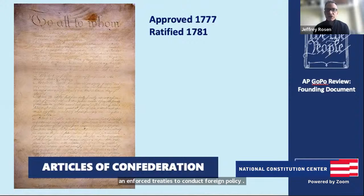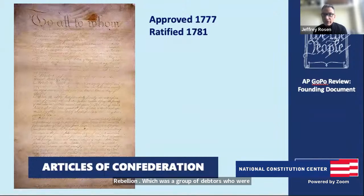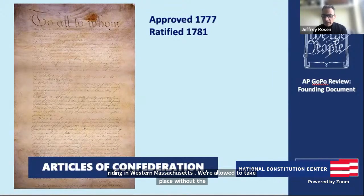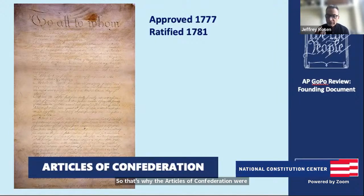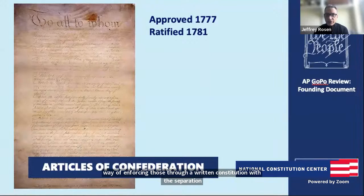Things like Shays' Rebellion — a group of debtors rioting in western Massachusetts — were allowed to take place without the power to easily restore the rule of law. So the Articles of Confederation were a negative example showing that it wasn't enough just to declare independence and say you have natural rights — you need a way of enforcing those through a written constitution with separation of powers, a vigorous executive, a strong but constrained Congress, and most important of all, an independent judiciary that can ensure the rule of law was neutrally enforced.